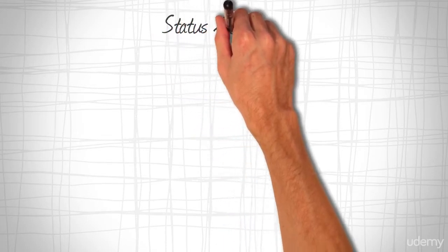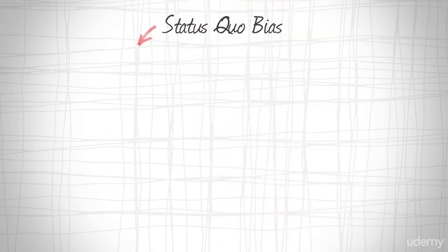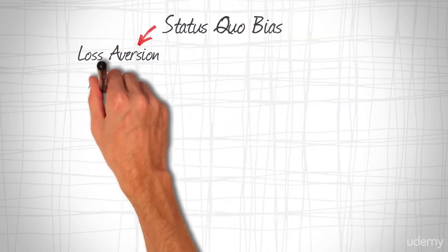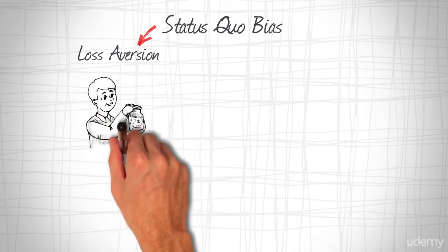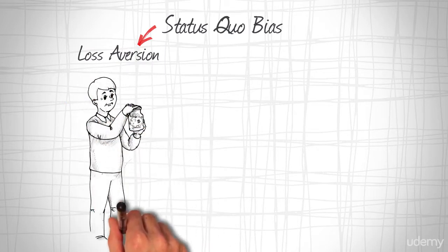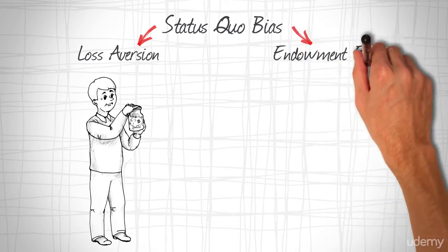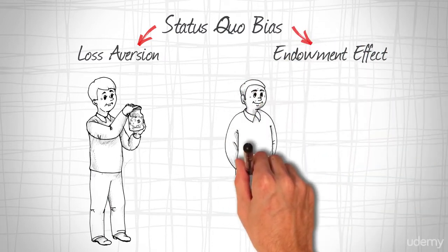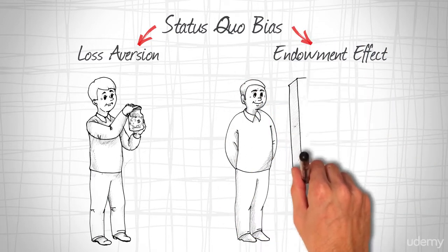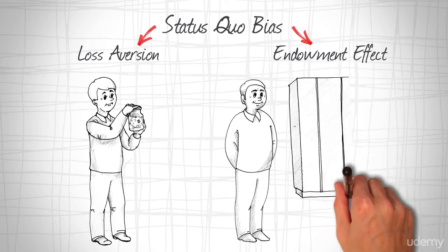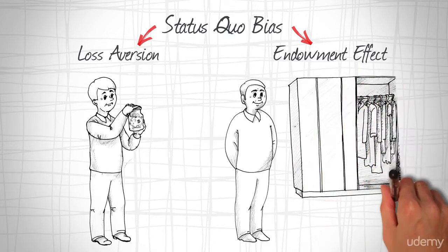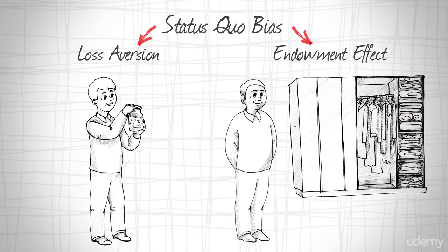I'll focus on two major lesser biases that can interact with status quo bias. The first is loss aversion, the tendency to strongly prefer avoiding losses to acquiring gains. The second is the endowment effect, the tendency to ascribe more value to things merely because you own them.